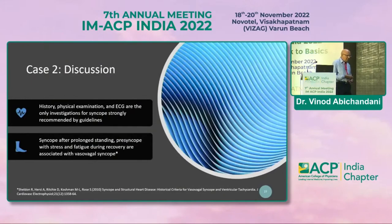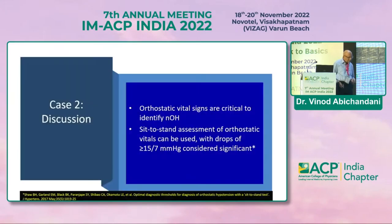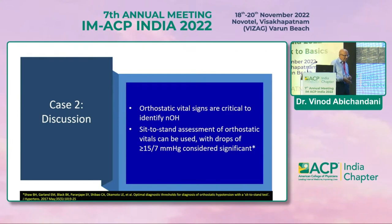History, physical examination, and ECG are the only investigations for syncope strongly recommended by guidelines. Syncope after prolonged standing and pre-syncope with stress and fatigue during recovery are associated with vasovagal syncope. Orthostatic vital signs are critical to identify neurogenic OH. A sit-to-stand test assessing orthostatic vitals can be used, with drops of more than or equal to 15/7 mmHg systolic/diastolic considered significant.